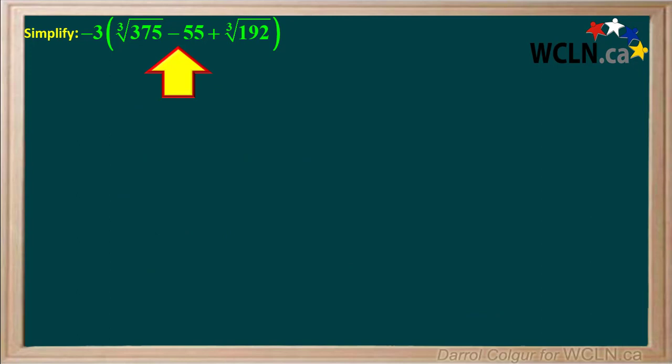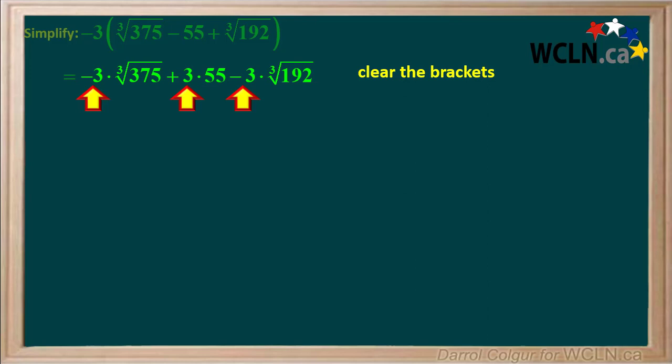We are asked to simplify this expression. Notice there are brackets with a negative 3 outside the brackets. So our first step is to clear the brackets by multiplying each term by negative 3. The bracket is removed and each term is multiplied by negative 3. Note that negative 3 times negative 55 is equal to positive 3 times 55, so we put a plus sign in front of the 3 times 55.